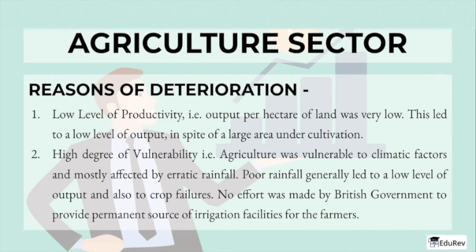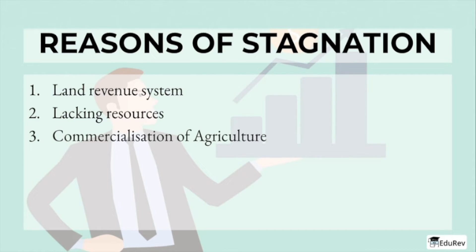Agriculture was also vulnerable to climatic factors and mostly affected by erratic rainfall. Poor rainfall generally led to low levels of output and crop failures. No effort was made by the British government to provide permanent irrigation facilities for farmers. The first reason for agricultural stagnation was the land revenue system. The Britishers introduced the zamindari system, and zamindars were recognized as permanent owners of the soil. They paid a fixed sum to the government as land revenue and were free to extract as much as they could from the tillers of the soil, with main interest in rent collection regardless of the economic conditions of the cultivators, causing misery and social tension.